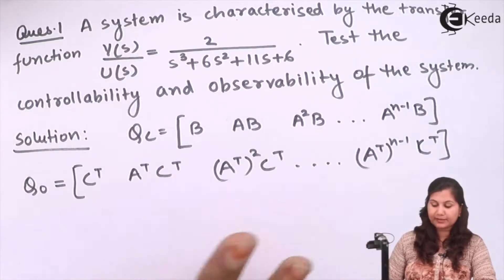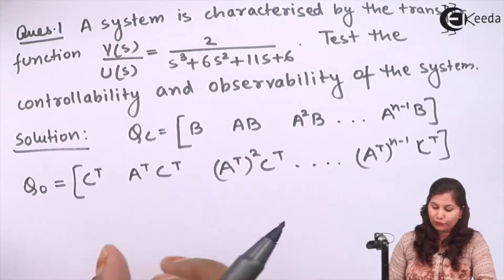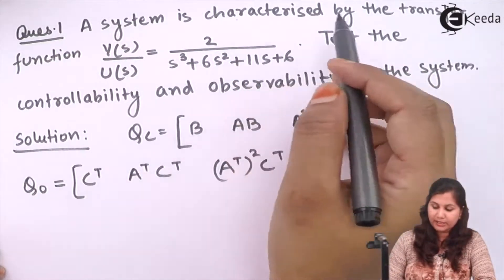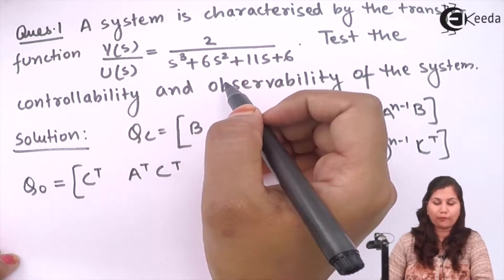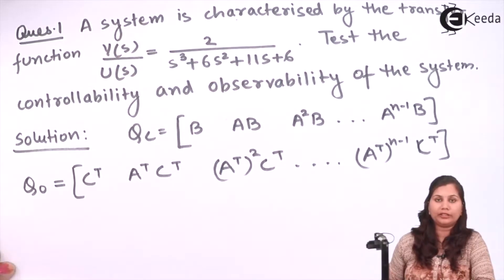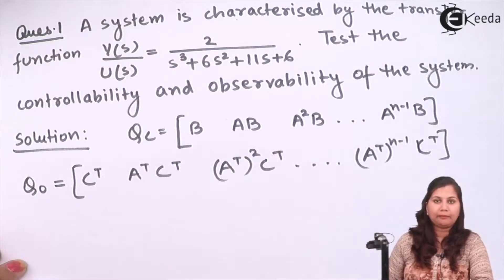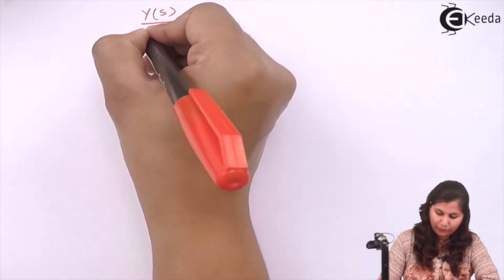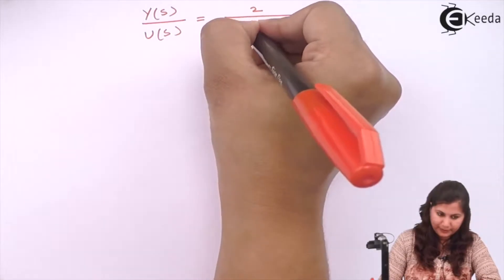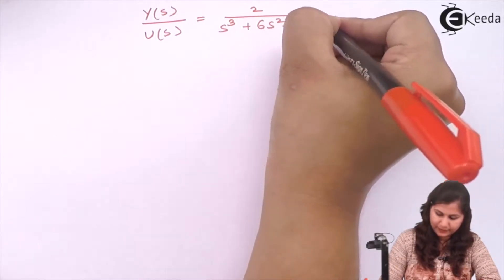Now here the A, B, C, D matrices of the state model are used. So first we have to determine the state model of this system because it is given to us in transfer function form. Using this transfer function we will derive the state model, and through the state model we will get the A, B, C, D matrices. The transfer function is Y(s)/U(s) = 2 / (s³ + 6s² + 11s + 6).